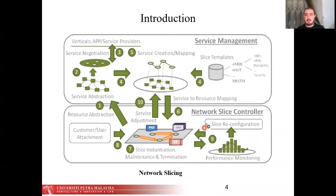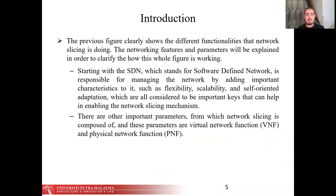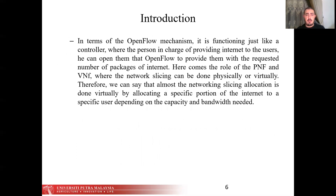Here, the services provided and the service management for network slicing are shown. The previous figure clearly shows the different functionalities that network slicing performs. Starting with SDN, other important parameters that network slicing is composed of include the virtual network function (VNF) and the physical network function (PNF). In terms of the OpenFlow mechanism, it functions like a controller providing internet to users, opening flows to provide the requested amount of bandwidth to specific users depending on capacity and bandwidth needed.